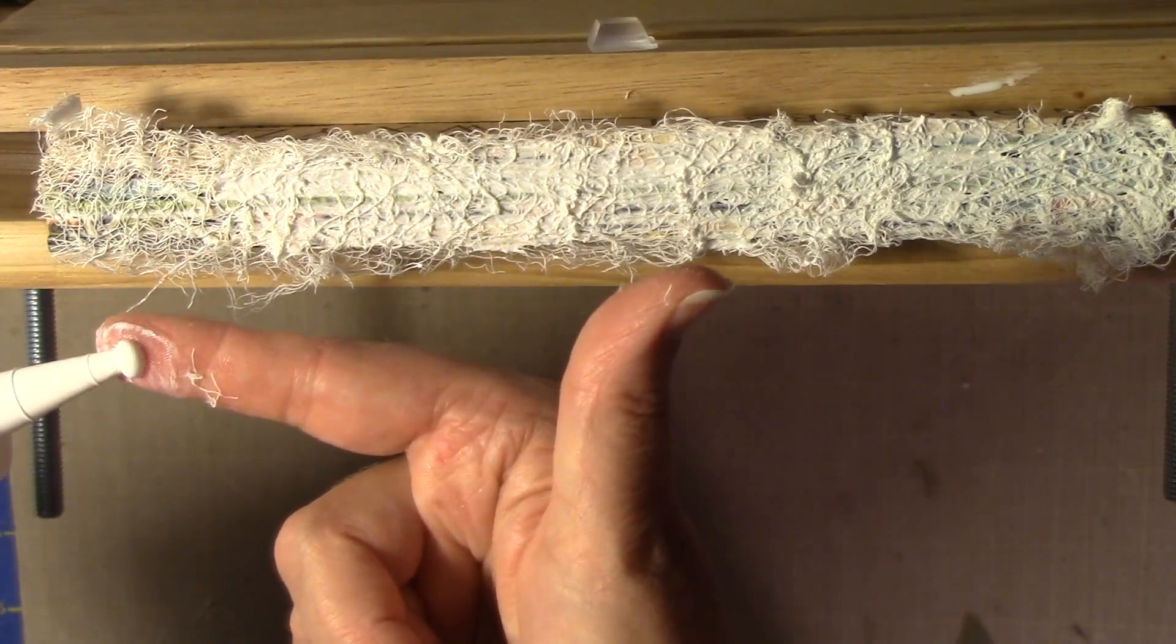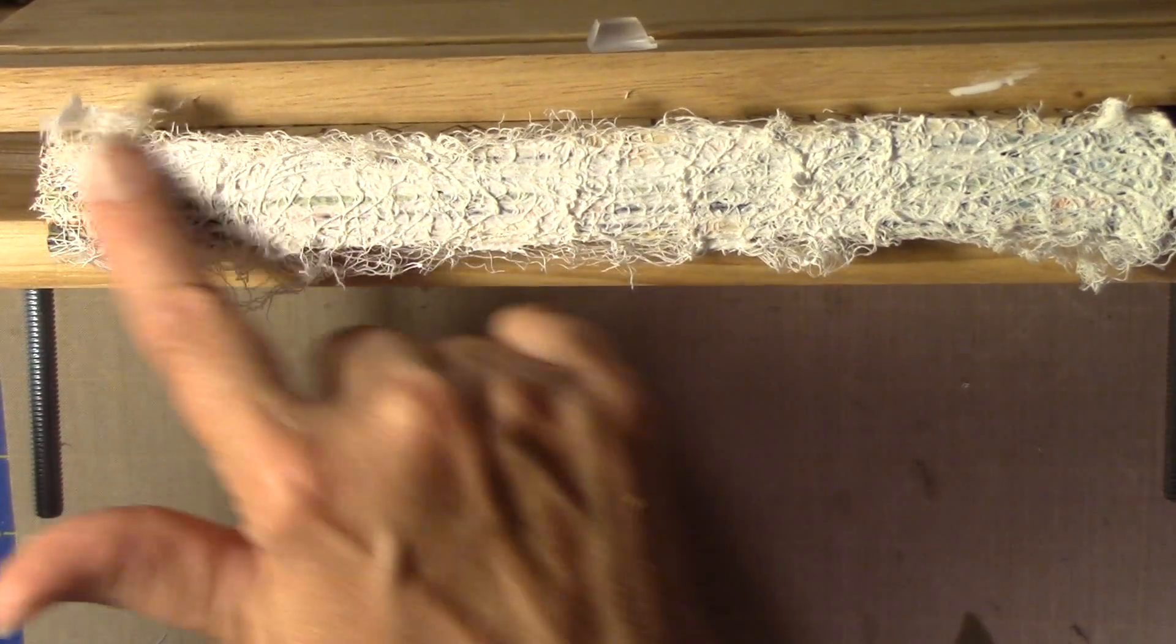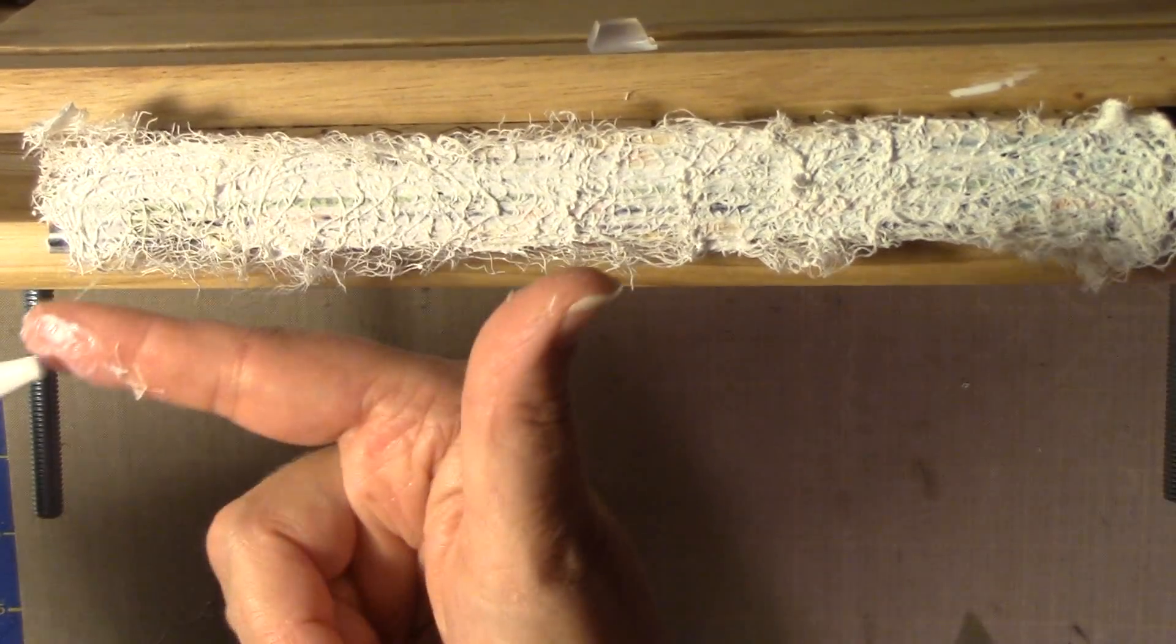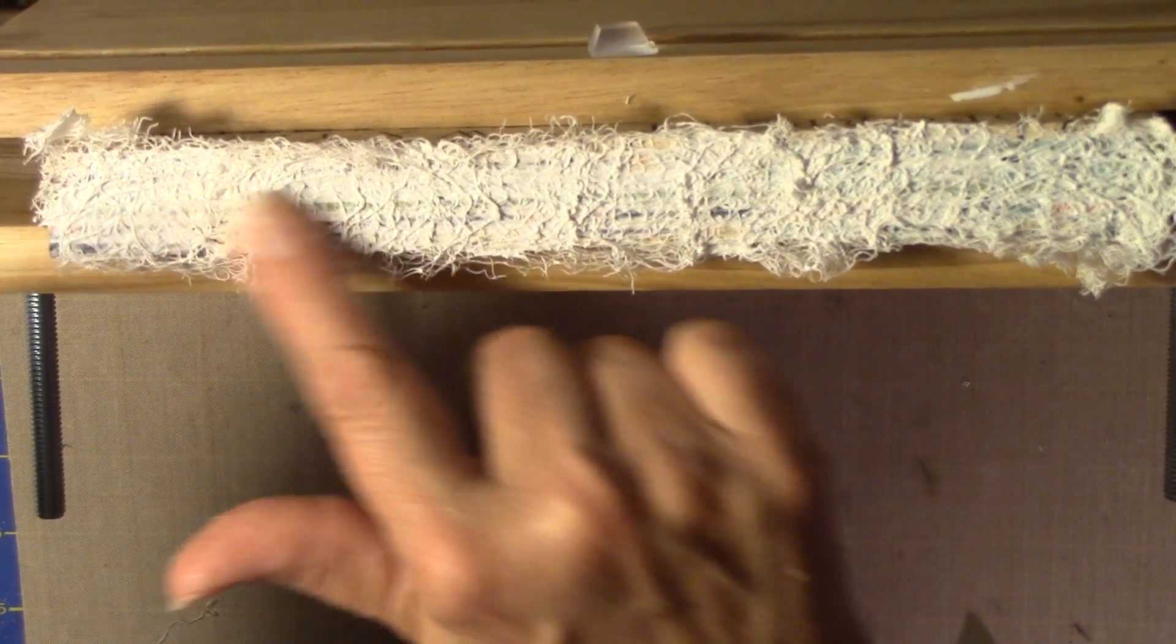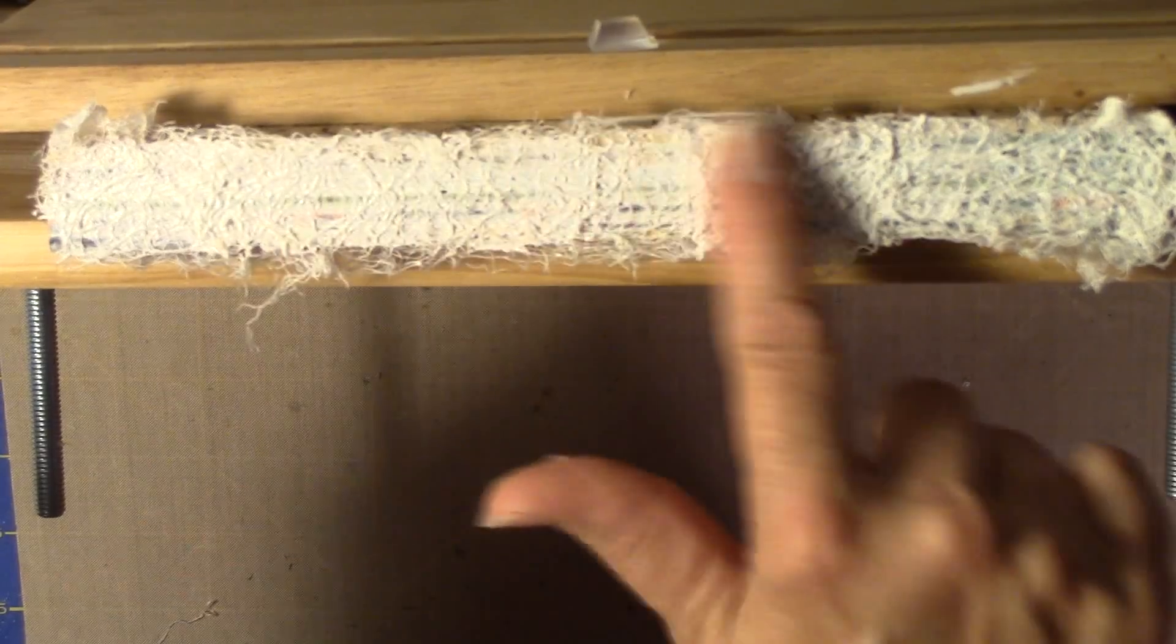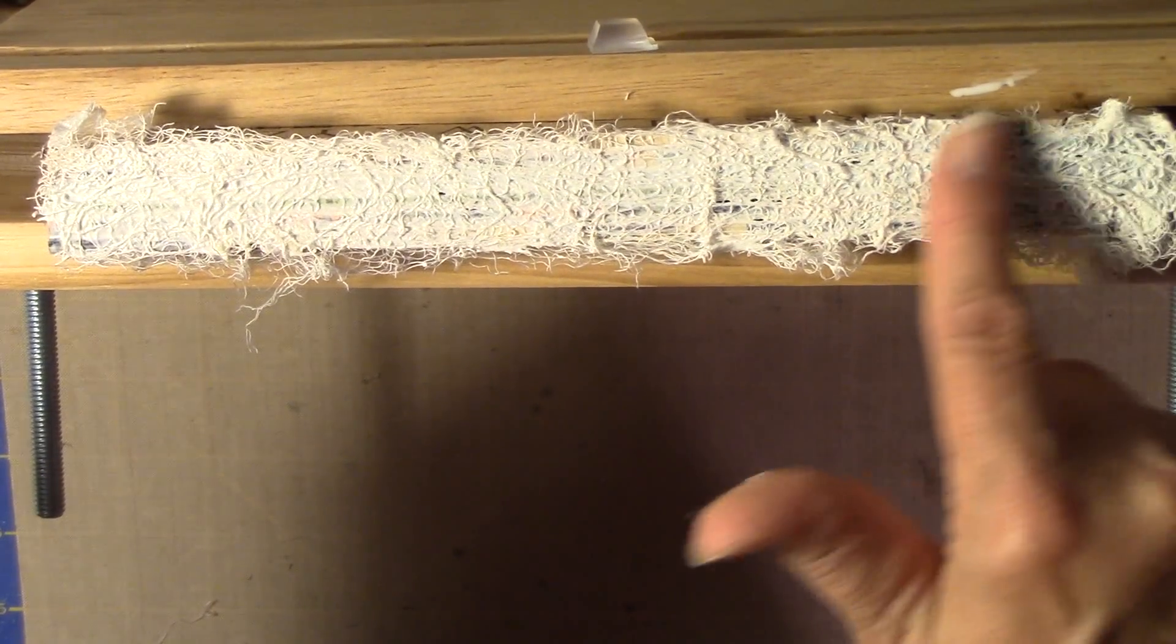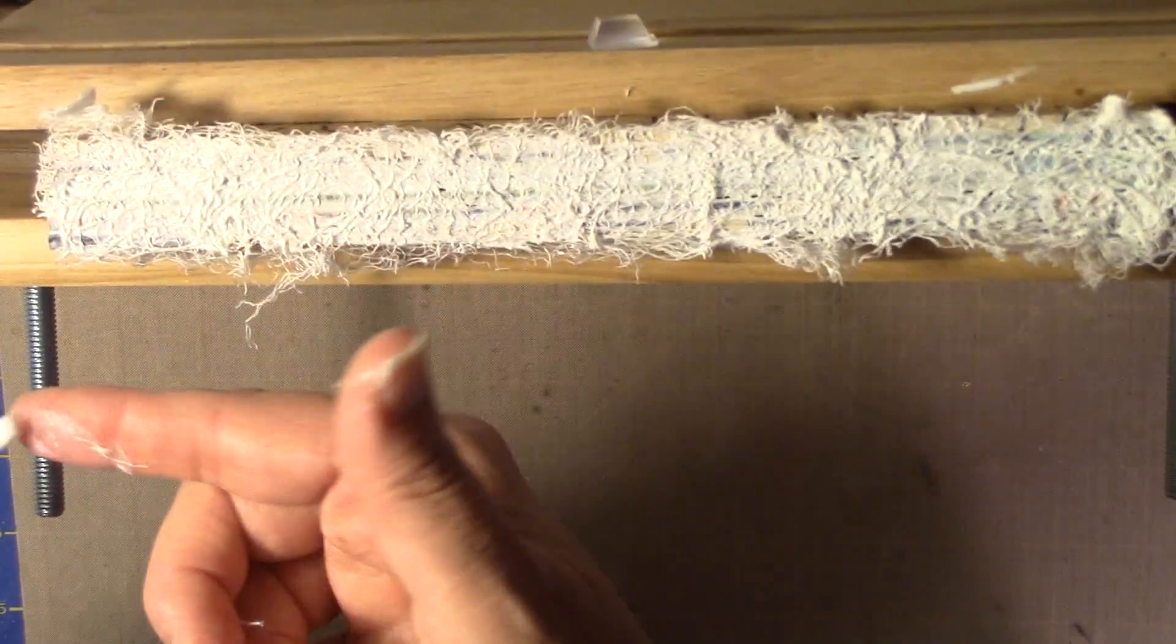And this PVA glue is fabulous stuff, and it dries pretty quickly. And it dries clear. And it's also going to be pliable. So that's always really nice with the books, because you want it to be strong but pliable.